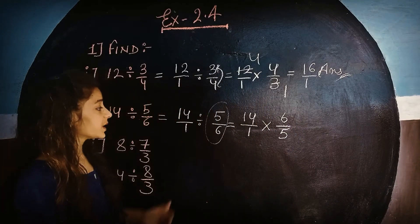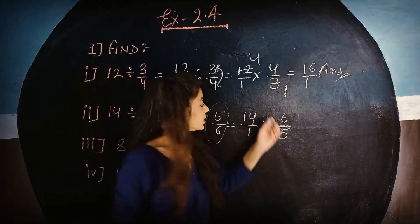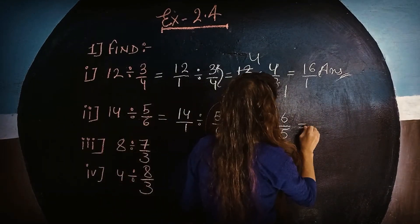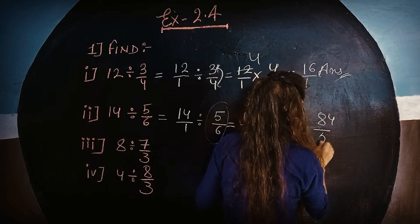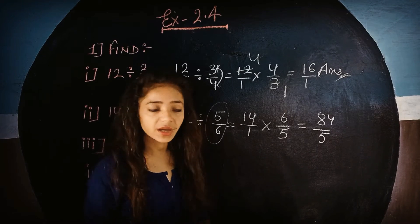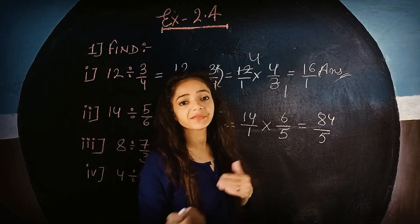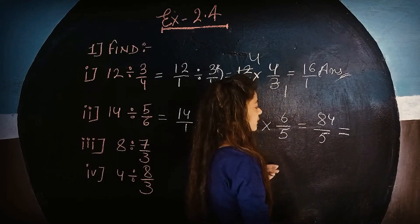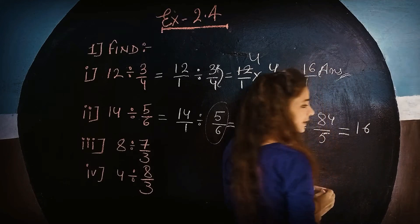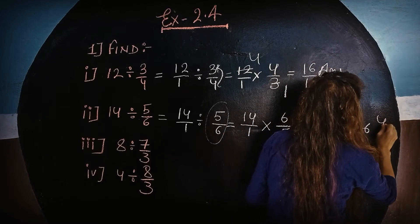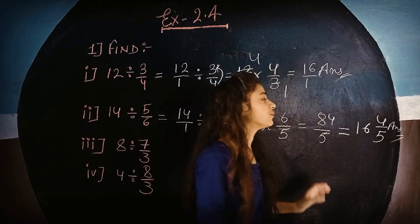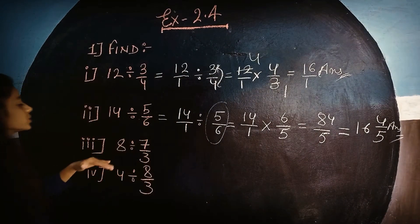Now look at this. Numerator multiplied by numerator and denominator multiplied by denominator gives us 84 upon 5. Now 84 upon 5 is an improper fraction, so we need to convert it. Dividing 5 into 84: 5×16=80, remainder 4. So the answer is 16 whole 4 upon 5.